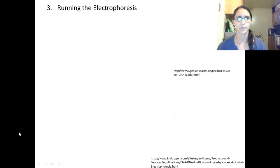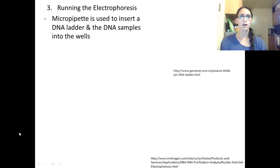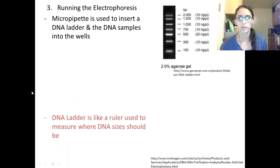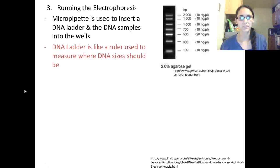Running the electrophoresis. A micropipette is used to insert a DNA ladder and the DNA samples into wells. Here's an image of a DNA ladder. A DNA ladder is like a ruler used to measure where the DNA sizes should be. They're known DNA sizes.